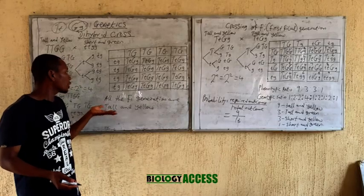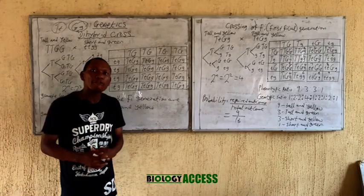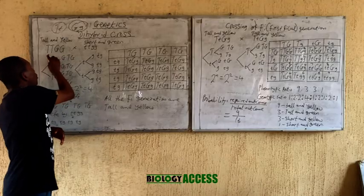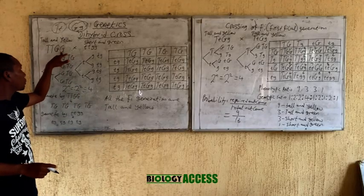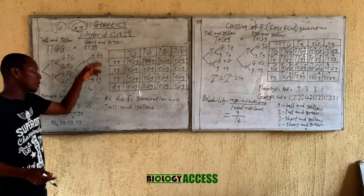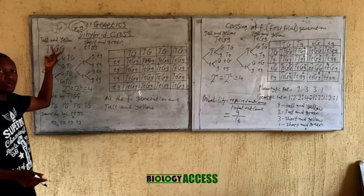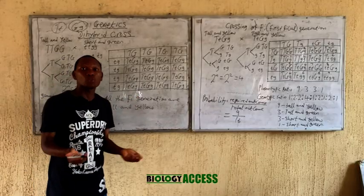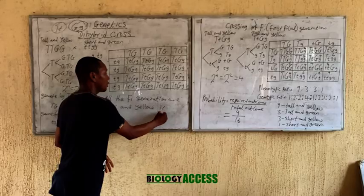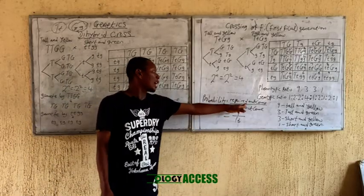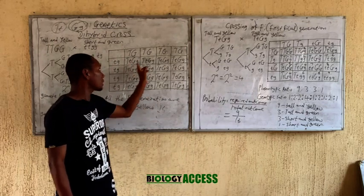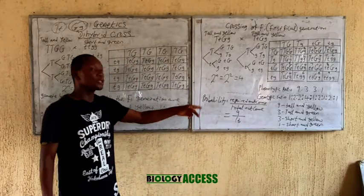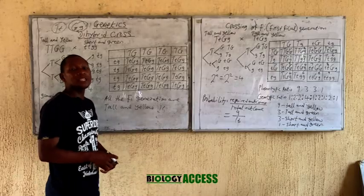You realize that all the offspring in the F1 generation are tall and yellow. Tall is dominant over short, so this organism will be tall; yellow is dominant over green, so this organism will be yellow. All organisms are tall and yellow. If you're asked for the probability of getting a tall and yellow pea plant from this cross, the answer is 16 out of 16, which equals 1.